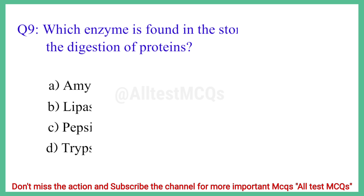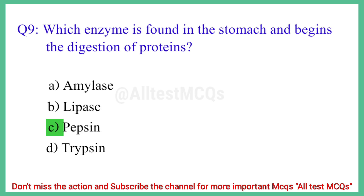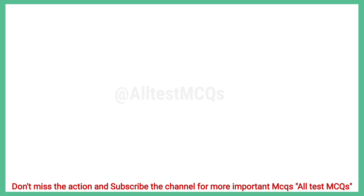Question No. 9: Which enzyme is found in the stomach and begins the digestion of protein? The correct answer is option C: Pepsin.